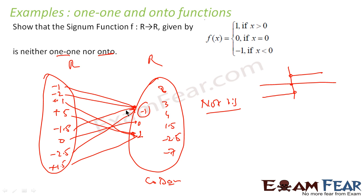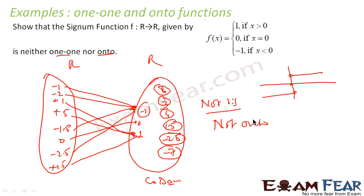For onto, we have to check whether there are orphan elements. Yes, there are orphan elements. The only 3 values possible as output are 1, 0, and -1, so all other real numbers like 2, 3, 1.5, -2.5 in the codomain are orphan elements. Since there are orphan elements in the codomain, it is not onto.